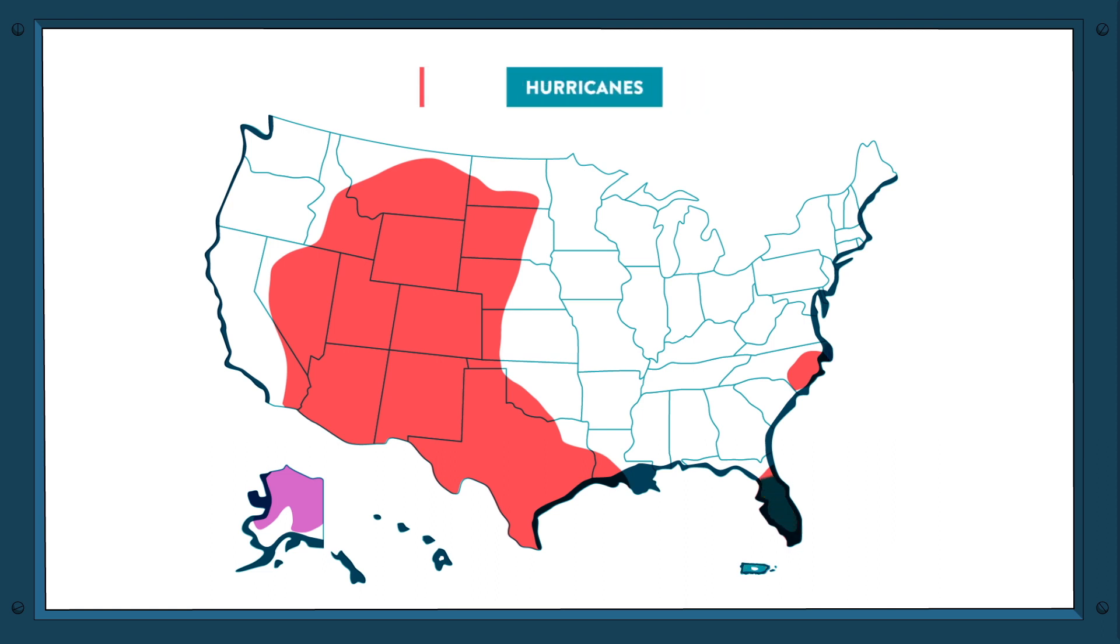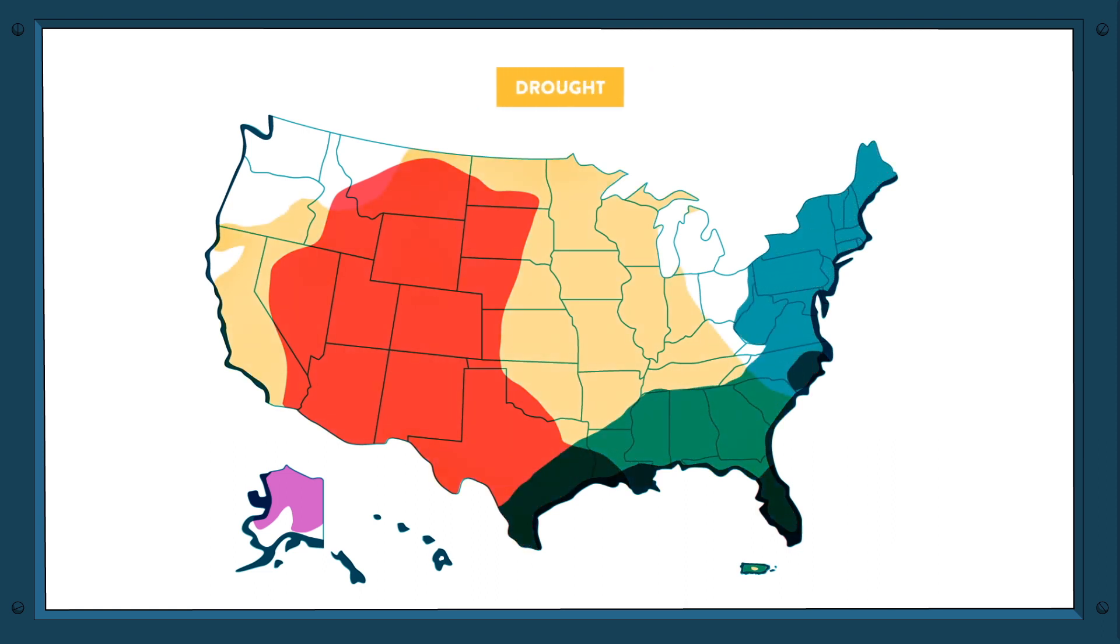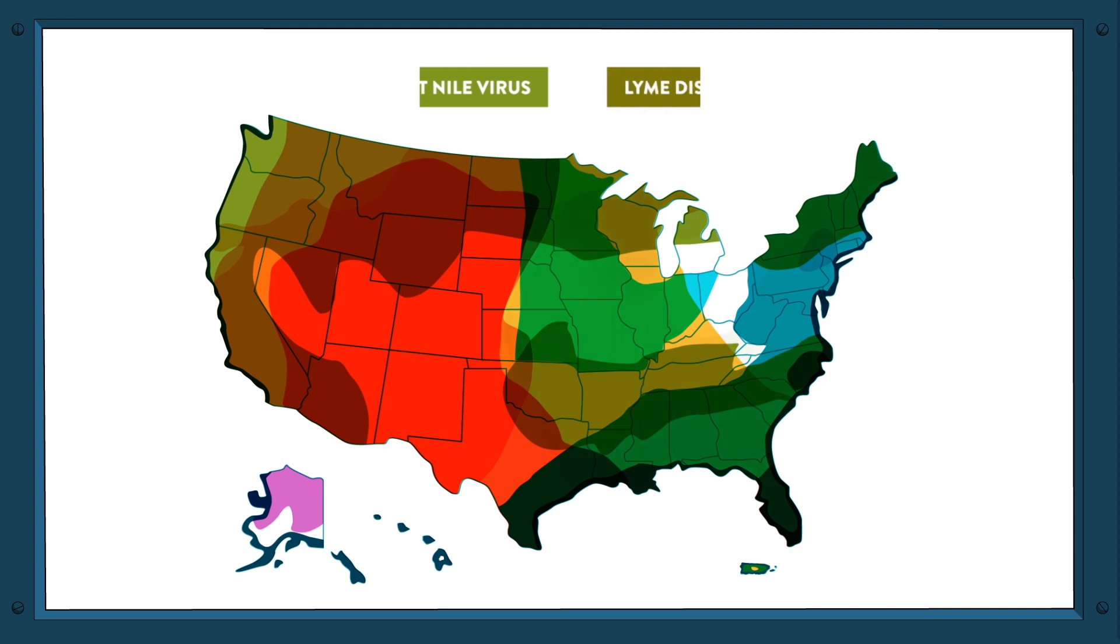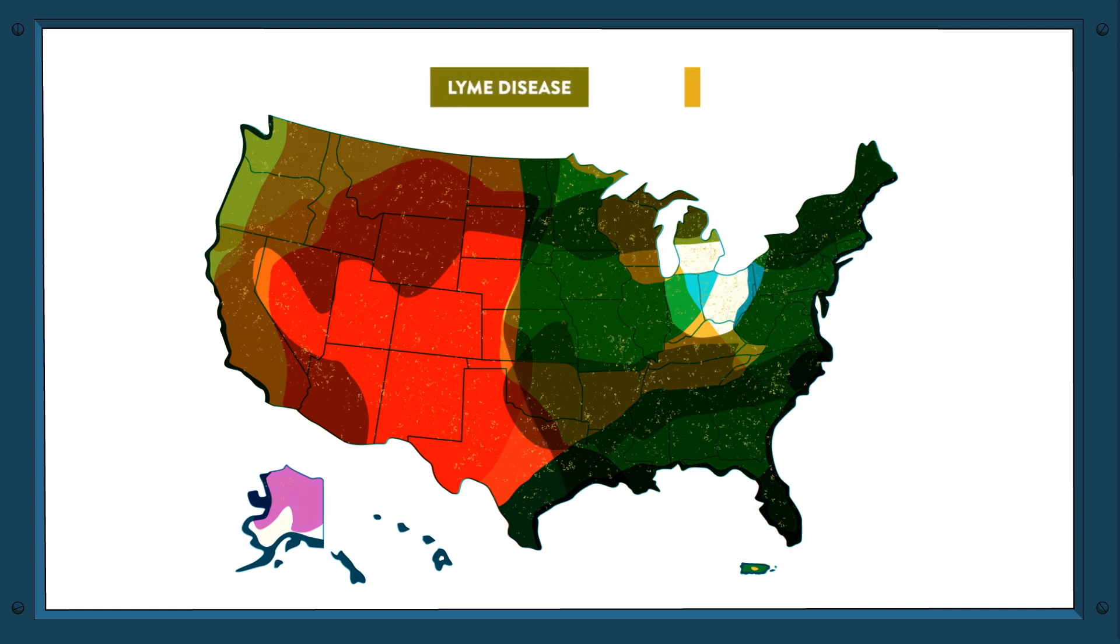In the east, we're seeing more destructive storms and hurricanes. Severe droughts and flash floods are ruining farmlands. Wildfires are getting way bigger. Then there's the spread of diseases like West Nile virus and Lyme disease, not to mention pollen allergies get worse everywhere.